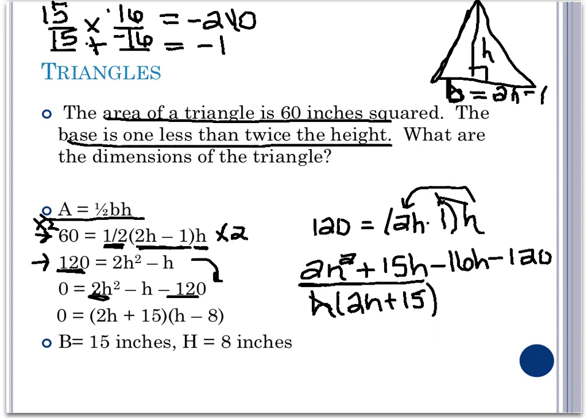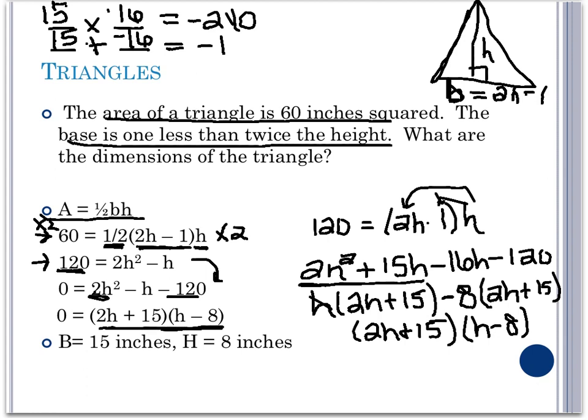In the next two terms, we can factor out a negative 8. And if we do that, we're left with 2h plus 15. Therefore, factoring out a 2h plus 15 from both terms, we will get into our factored form. So 0 is equal to 2h plus 15 and h minus 8.